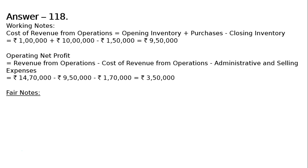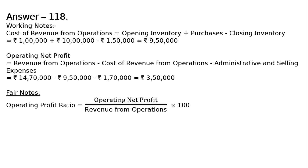Next step is the Final Notes. Operating Profit Ratio is equal to Operating Net Profit divided by Revenue from Operations, multiplied by 100. That is equal to Rs. 3 lakh 50,000 divided by Rs. 14 lakh 70,000, multiplied by 100, which equals 23.81%.